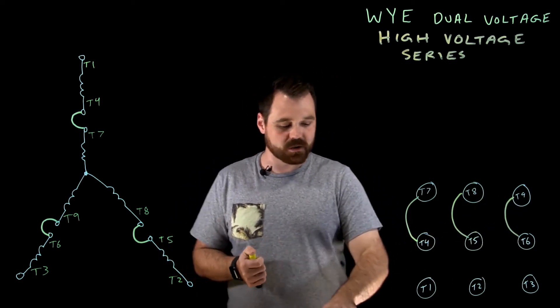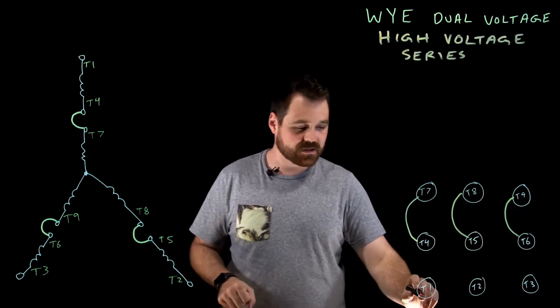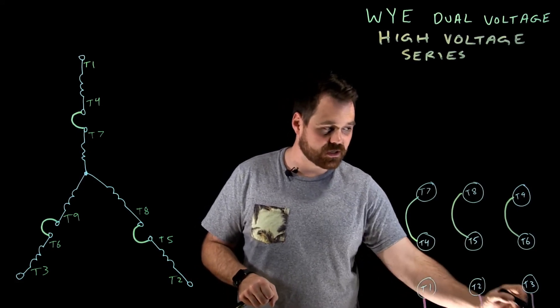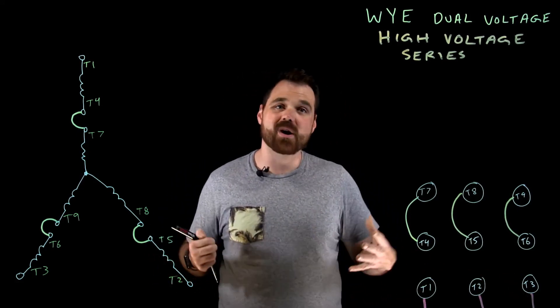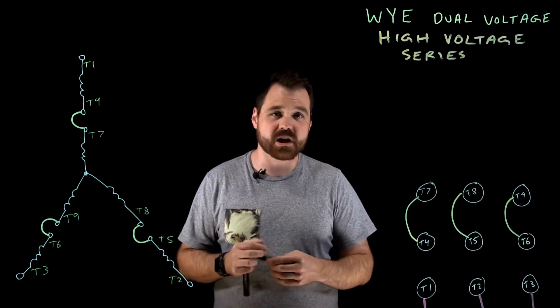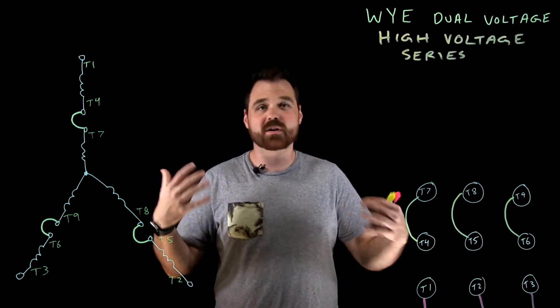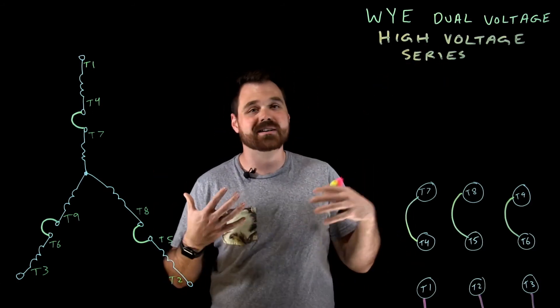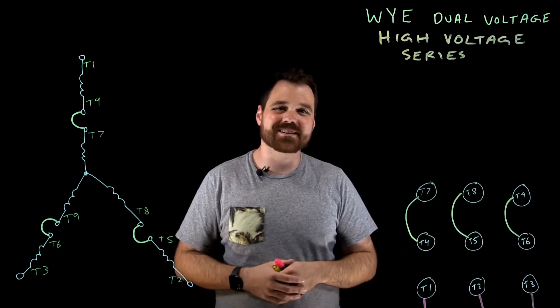And then of course, we definitely don't want to forget, we need to connect T1, T2 and T3 down to my line one, line two and line three conductors. Now that would make this motor run in a high voltage situation because our windings are connected in series.